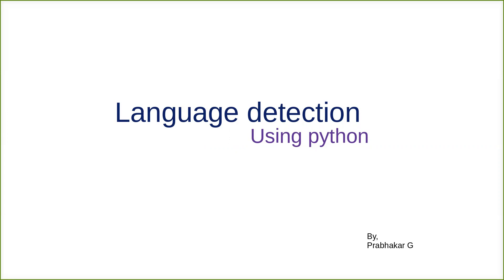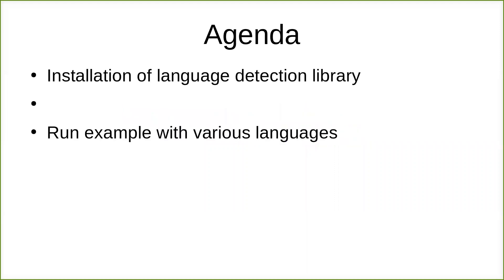The idea behind language detection is based on detecting characters among expressions and words in the text. The main principle is to detect commonly used words, like 'of' in English. The main agenda for this session is installation of the language detection library and running examples with various language detections. One disclaimer: the language detection algorithm is non-deterministic, which means if you run it on text that is too short or too ambiguous, you might get different results every time.